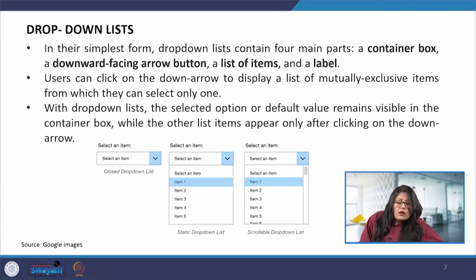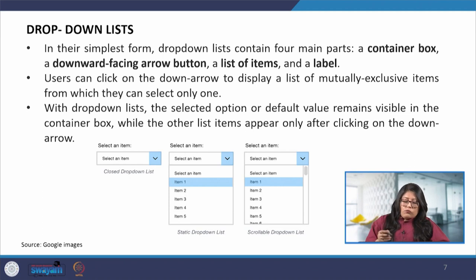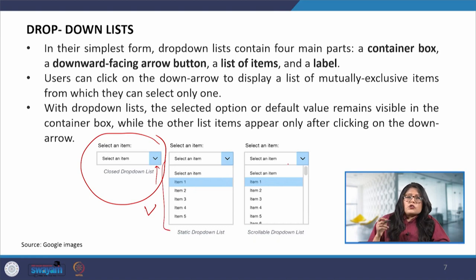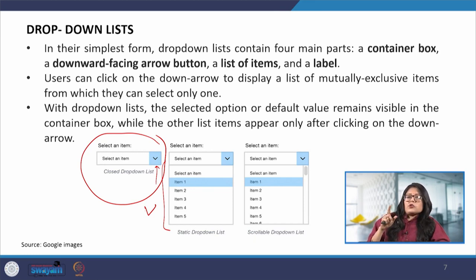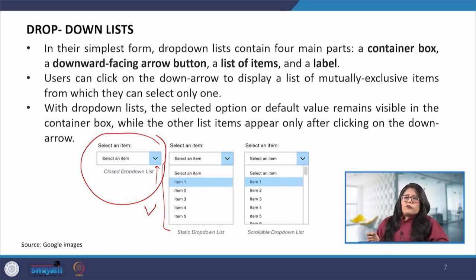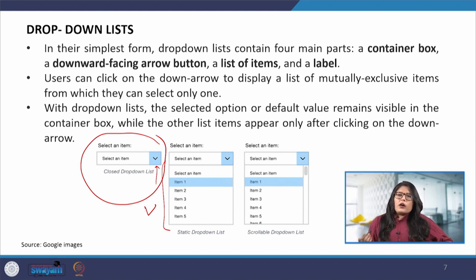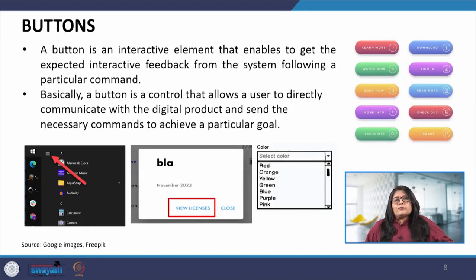Drop-down lists have four main items: the container box, an arrow, a list of items, and a label. This type of interaction allows one to choose only one option. This is very common when we are selecting a country or state — all the states appear alphabetically and we move down and select the one we want. When the arrow is clicked, the options remain visible so we can make our choice and select the appropriate option.